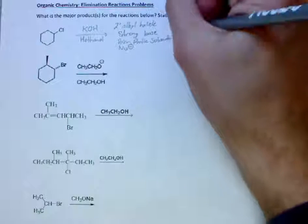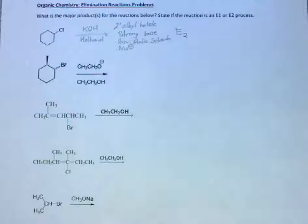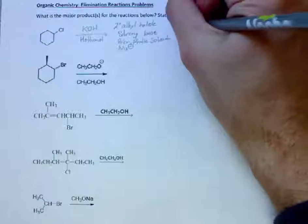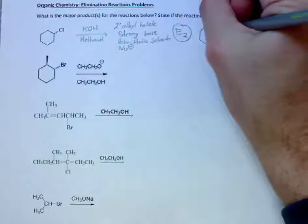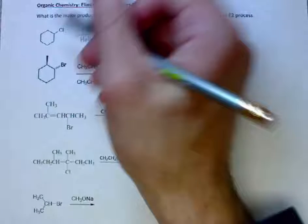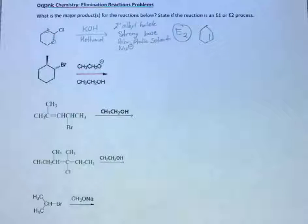This is going to be an E2 process and the product will be this. We can take a beta hydrogen off of either carbon but we will still end up with the same product.